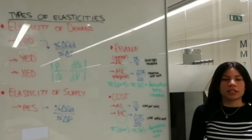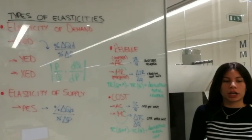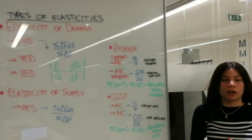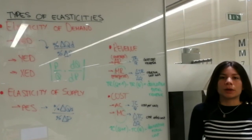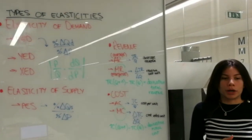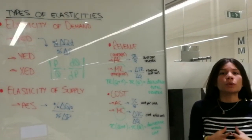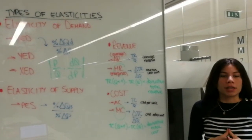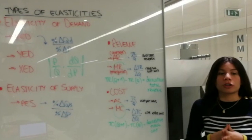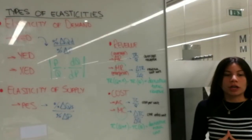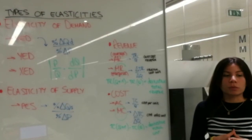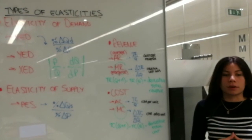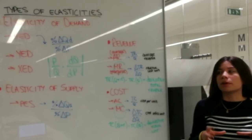Marginal cost is approximated by the rate of change of the total cost function evaluated at the appropriate point. For this reason, economists have defined the marginal cost function to be the derivative of the corresponding total cost function. In other words, marginal is the synonym of derivative.